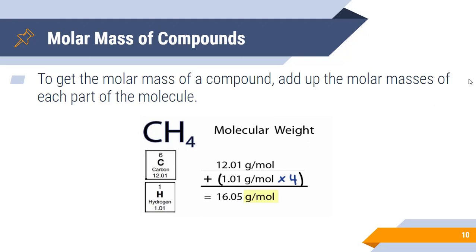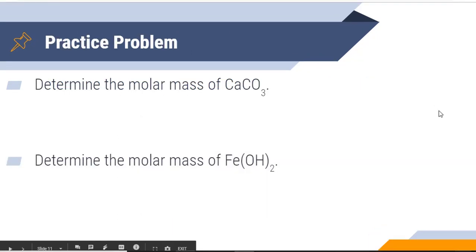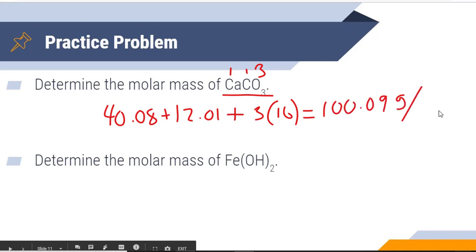Let's do some practice with this. The first problem asks us to determine the molar mass of CaCO3. Now this one's pretty straightforward. All we're going to do is we're going to take the mass of one calcium, one carbon, and three oxygens and add them together. So we're going to take 40.08 plus 12.01 plus 3 times 16. We get our answer of 100.09 grams per mole. Make sure you're including your units in everything that you do.